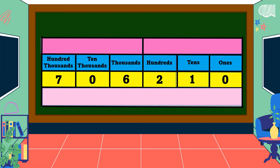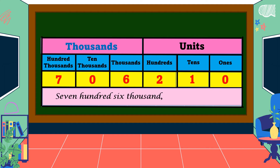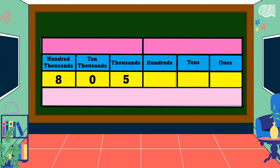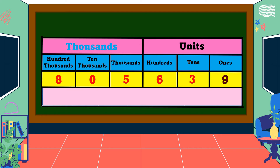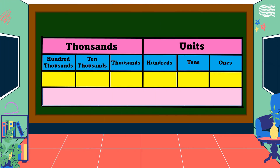Don't forget to put a comma between the thousands and units period. Another example: we read by period from left to right. We have 706 thousand, 210. In words: 706 thousand, 210. Next example: 805 thousand, 639. In words: 805 thousand, 639.